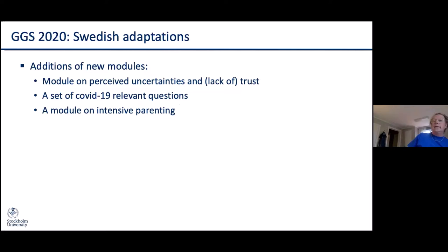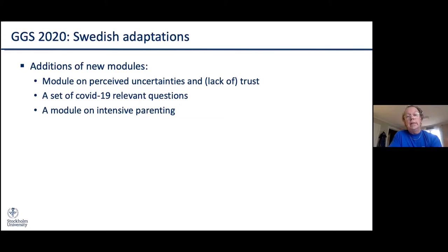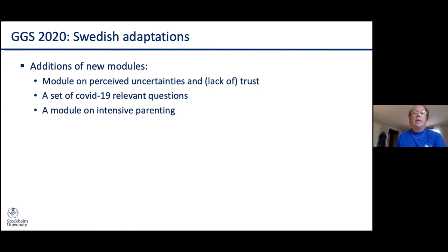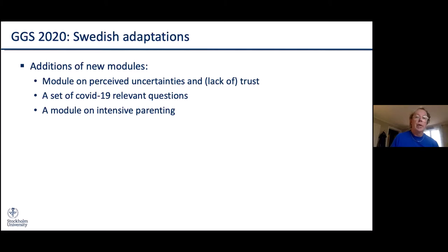Instead, we added a few new modules that we thought are particularly important for studying ongoing fertility declines in the Nordic countries and in Sweden. We developed a module on perceived uncertainties and lack of trust, which we think can be some of the factors contributing to fertility decline, since we have shown it's not related to structural hardcore factors. Of course, this was carried out during the course of the pandemic, so it was necessary to have a set of COVID-19 relevant questions. We also added a module on intensive parenting, which could be another factor contributing to fertility developments observed in recent years.